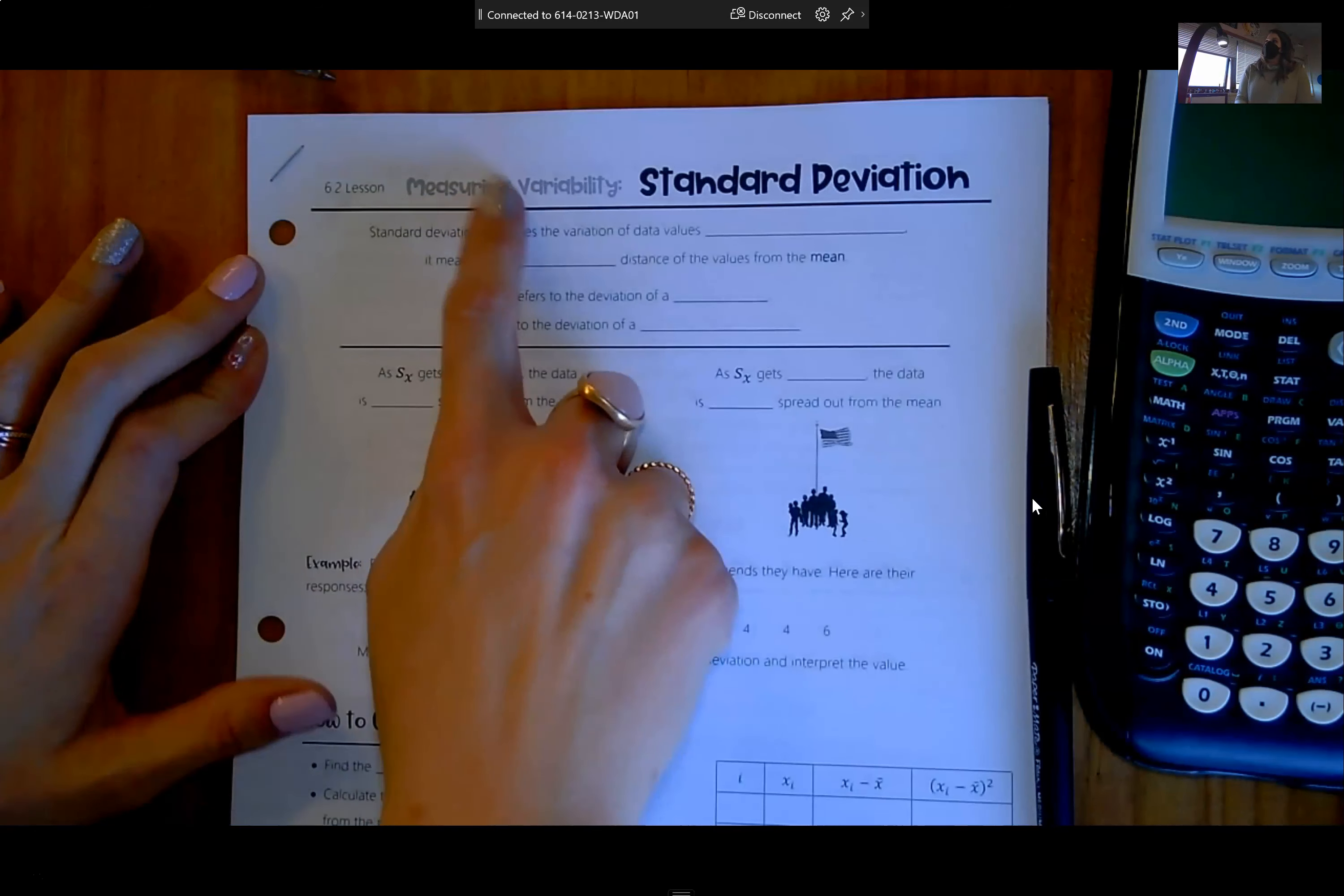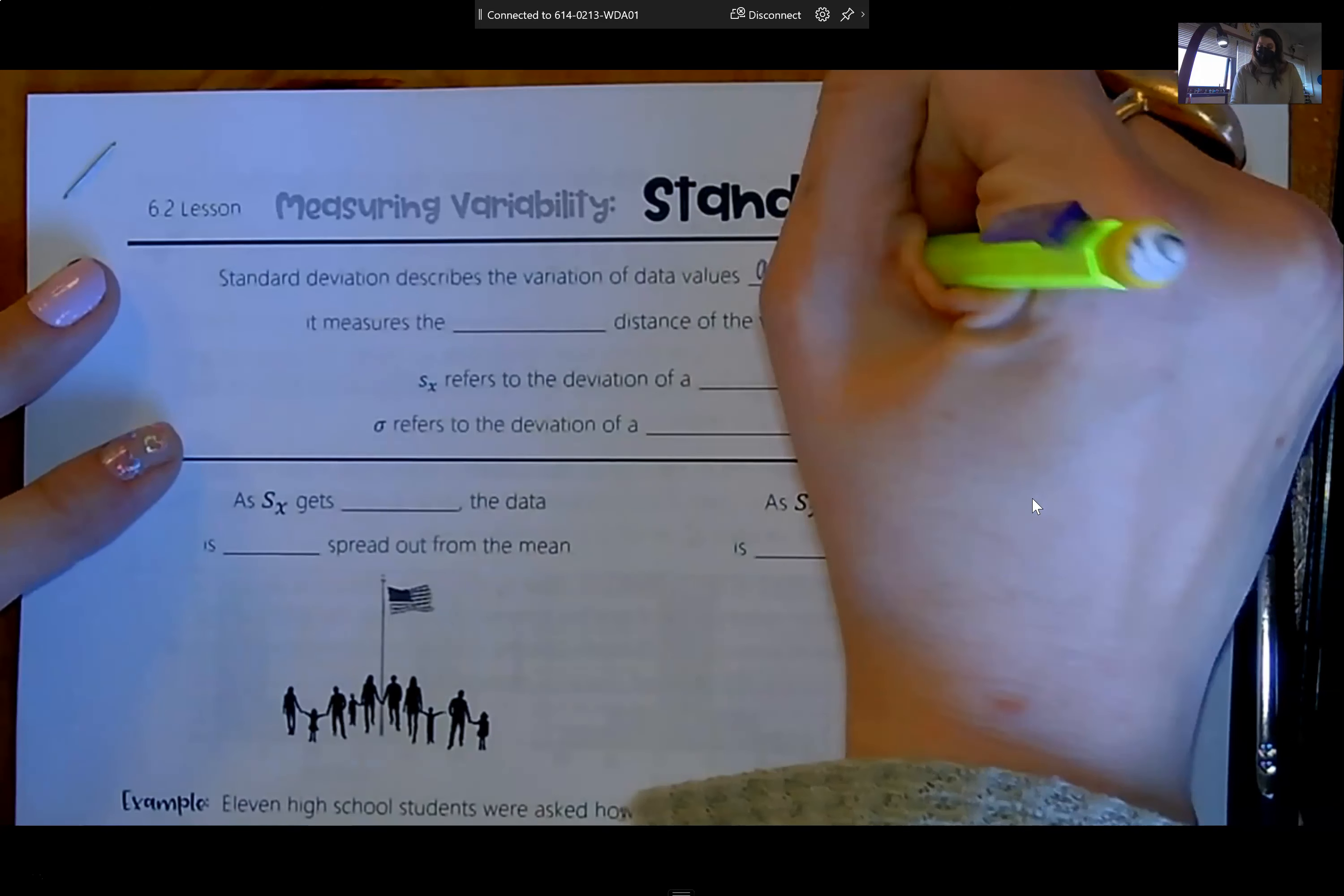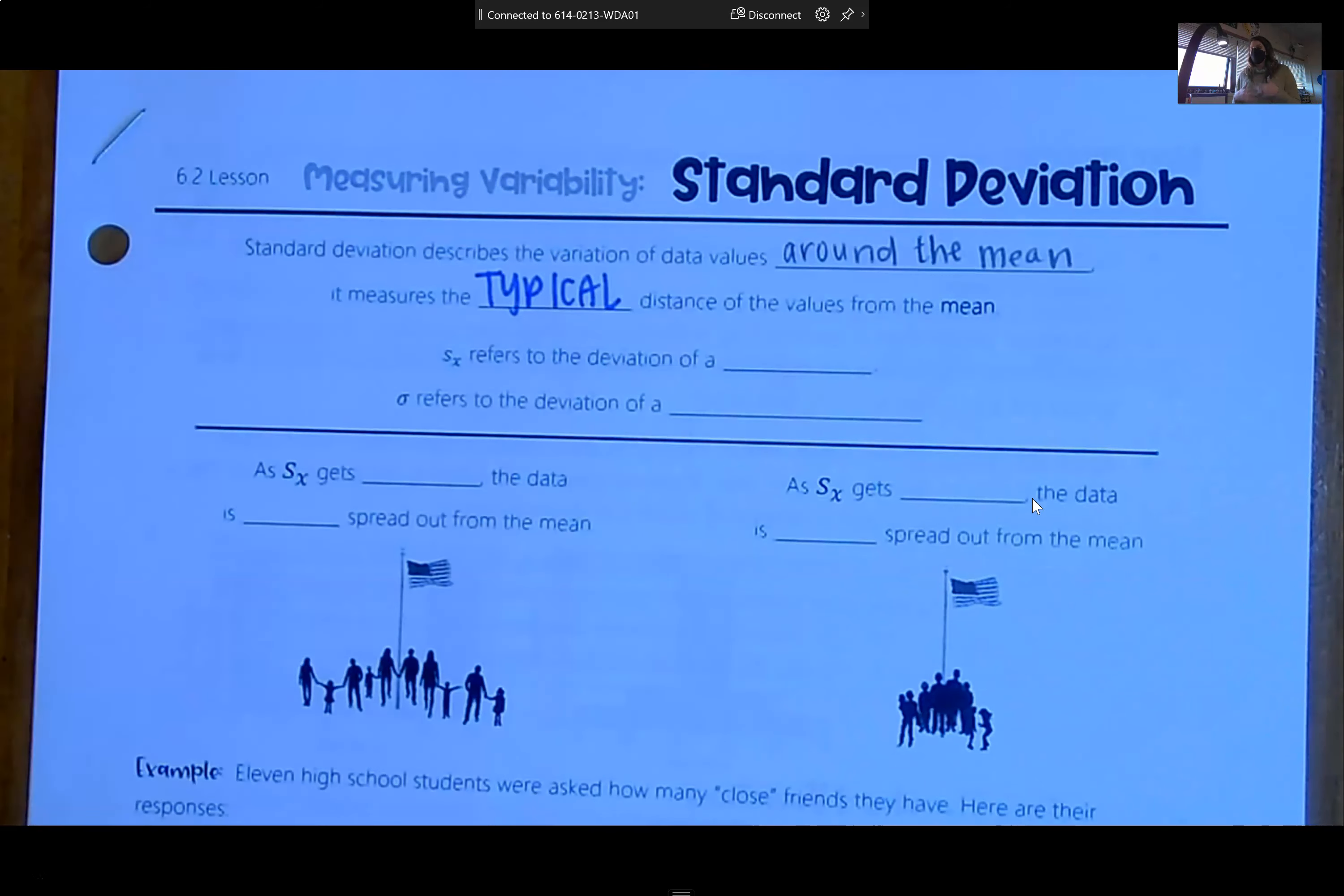So now we actually learn the basics of standard deviation. Standard deviation is a measure of spread. So the most appropriate word for spread is variability. Standard deviation describes the variation of data values around the mean. Instead of the prediction line like we did in scatter plots, what we're most interested in is how far are the observations from the mean.